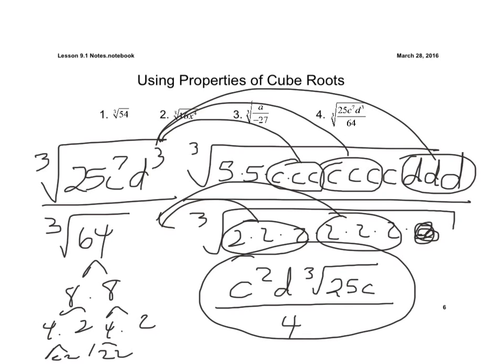So again, when you're doing cube roots, you're going to do the factor tree, write out the variables raised to the power, and look for triples. Now, if it were a fourth root, you'd look for groups of 4.